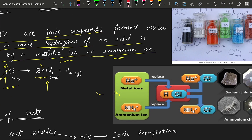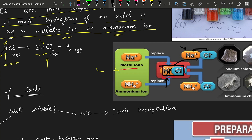In this case we have a sodium metal ion replacing the hydrogen. We have HCl acid, and hydrogen is being replaced by a sodium ion, which attaches to the chloride ion to form sodium chloride. Similarly, an ammonium ion can also replace the hydrogen of HCl to form ammonium chloride. So sodium chloride and ammonium chloride are both salts formed by replacement of hydrogen.